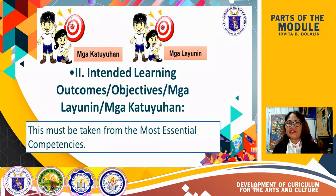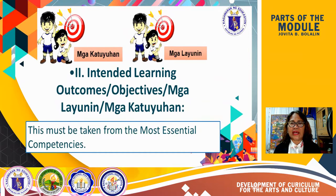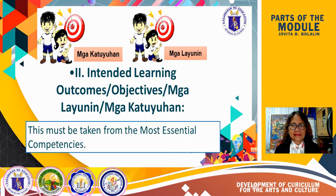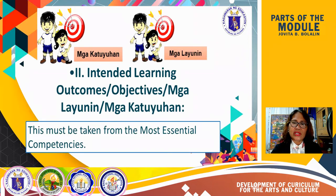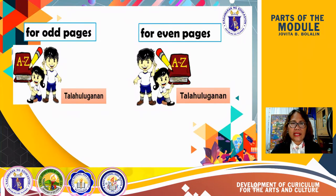Part 2 will be the intended learning outcomes. You can also label these as objectives — in Filipino, mga layunin; in Bicol, mga katuyuhan. These must be taken from the most essential learning competencies. Therefore, before you write your module, you already know the intended learning outcome or the objective, so that you could choose it from the most essential competencies. Here are the suggested icons.